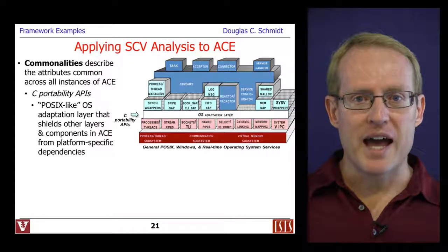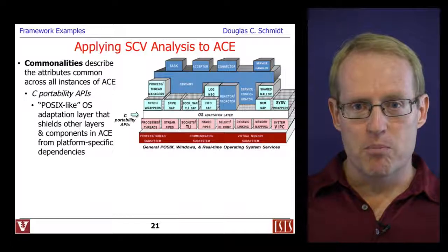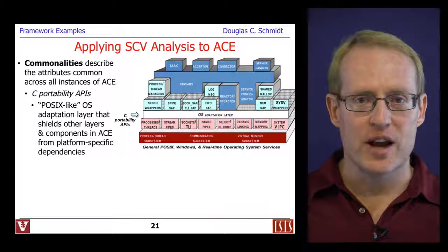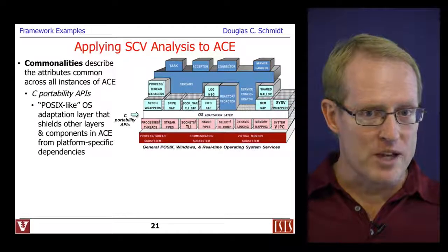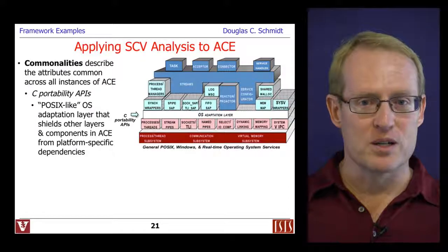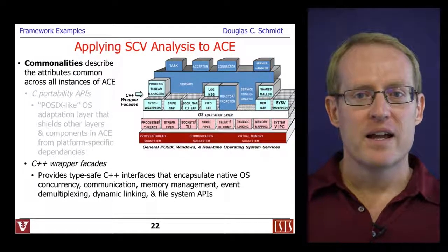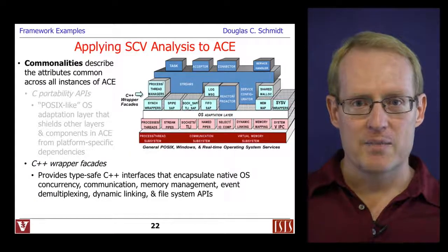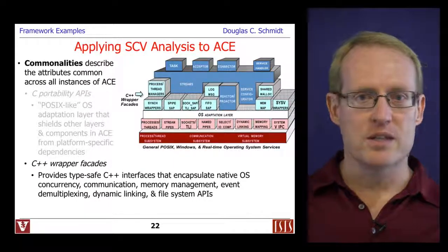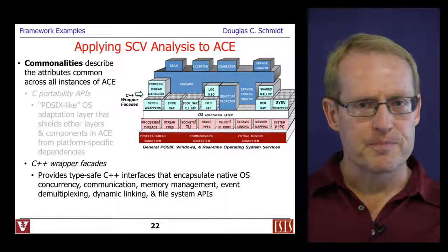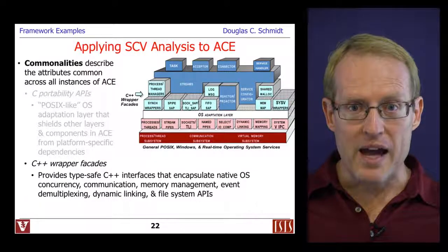Let's talk about some of the commonalities in ACE — things you'll find on all the different instantiations. One of the things it provides is a portability layer — an operating system adaptation layer that provides POSIX-like APIs that shields higher layers of ACE and other middleware from the low-level platform-specific details and dependencies. On top of this abstraction layer are a set of C++ wrapper facades. These wrapper facades provide an object-oriented interface to operating system services such as local and remote interprocess communication, concurrency, synchronization, event demultiplexing and multiplexing, file system interfaces, and dynamic linking. These wrapper facades implement the wrapper facade pattern, which we'll talk more about later in the course.